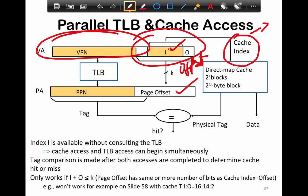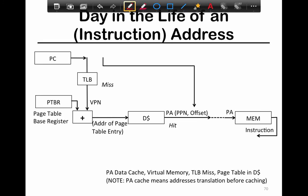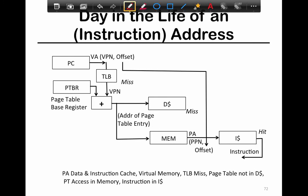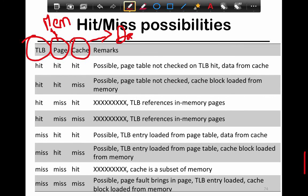Both the cache access and the TLB access can begin simultaneously. When both complete, you then check whether it's a hit or miss. The access of the cache itself can be done in parallel. There's also a table enumerating all the possible hit/miss possibilities between a TLB, a page in memory, and the data actually cached in the data cache - this cache refers specifically to the data cache.